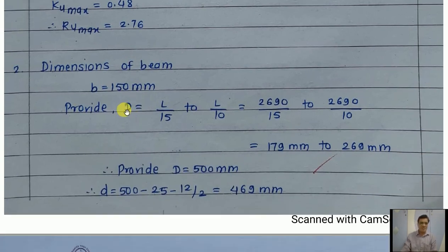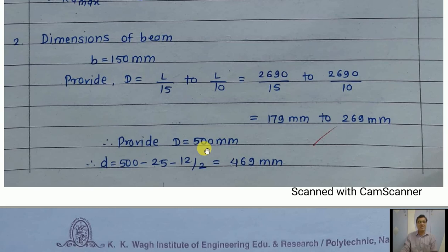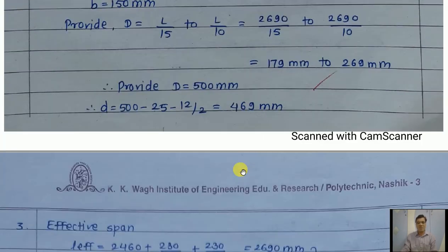For the dimensions of the beam, width is assumed as 150 mm. Using the thumb rule l/10 to l/15, the range is 179 to 169 mm, which is very small. However, since the beam supports a sunk slab sunk by 400 mm, adding 100 mm slab thickness gives 500 mm total. So the beam depth is provided as 500 mm due to the sunk slab requirement. Clear cover is 25 mm and bar diameter is 12 mm, giving an effective depth of 469 mm.